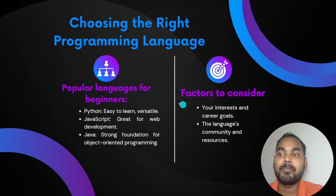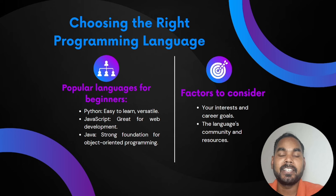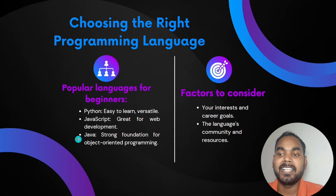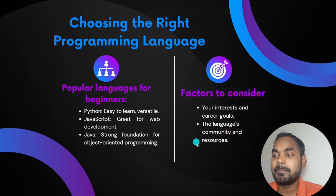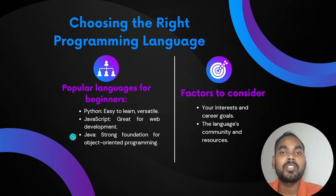You can select your programming language based on your goal. If you want to do web development, you can use HTML, CSS, and JavaScript. If you want to do back-end development, software development, or web application development, you can use Python, Java, .NET, or React. Choose based on the domain you are most interested in.